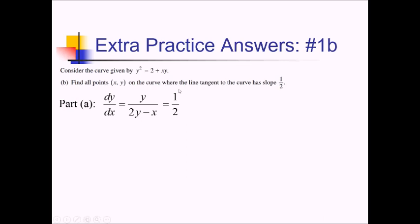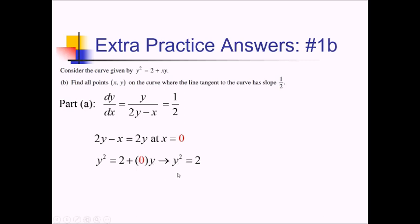Cross-multiplying gives us 2y minus x equals 2y. Subtracting 2y from both sides, negative x equals 0, so x must be 0. Now plugging 0 back into the original equation, y squared equals 2 plus 0 times y, which simplifies to y squared equals 2. That means y is positive or negative radical 2, giving us the points 0 comma negative radical 2 and 0 comma positive radical 2.